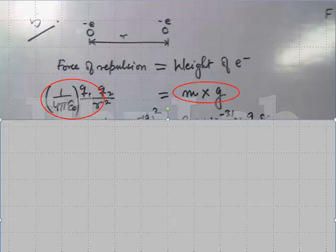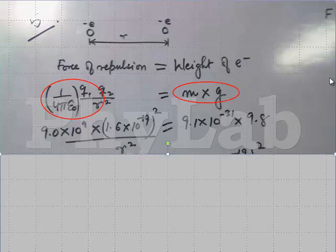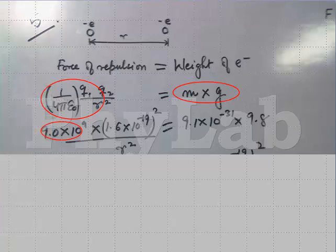Now, substituting the values, we all know 1 upon 4 pi epsilon 0 to be equal to 9 into 10 to the power of 9. So, here I have put that value 9 into 10 to the power of 9.